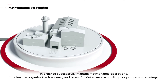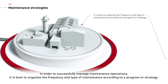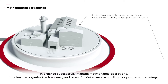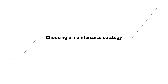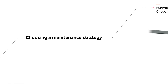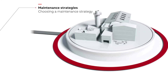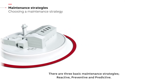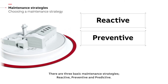In order to successfully manage maintenance operations, it is best to organize the frequency and type of maintenance according to a program or strategy. There are three basic maintenance strategies: reactive, preventive, and predictive.